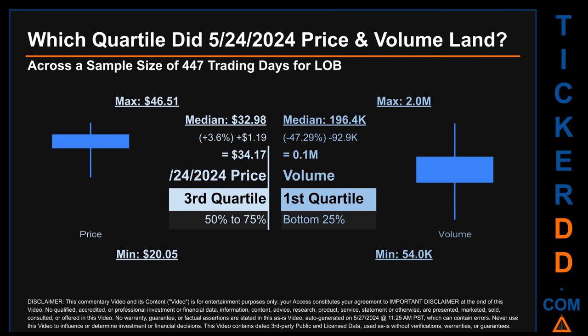Hello, my name is Maria. Which quartile did May 24th, 2024 price and volume land in? Across a sample size of 447 trading days, the maximum end-of-day price for LOB was $46.51 while the minimum was $20.05. Within that price range, May 24th, 2024 price of $34.17 landed within the third quartile, placing it within the 50 to 75% range of all sampled end-of-day prices. The day's volume landed within the first quartile — at the bottom 25% of all sampled daily volume — which saw a max daily volume of 2 million and a minimum of 54,000. LOB has a median price of $32.98.